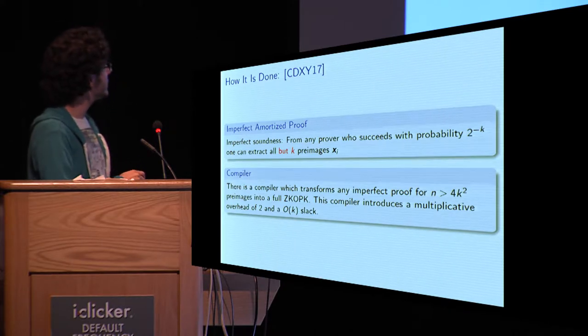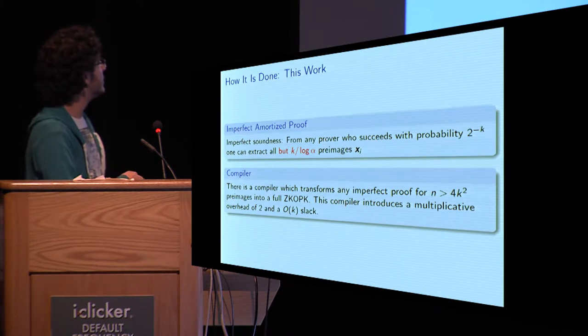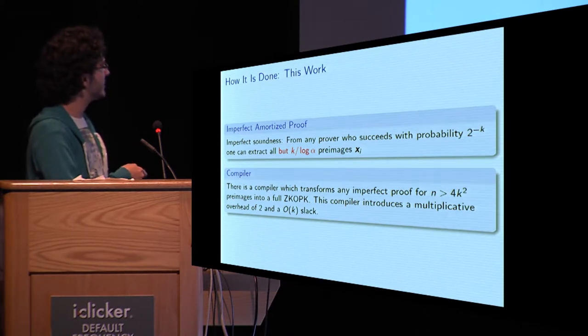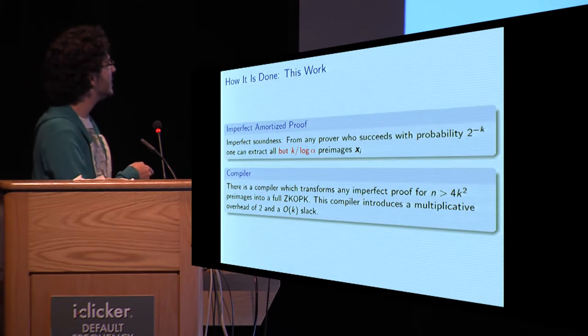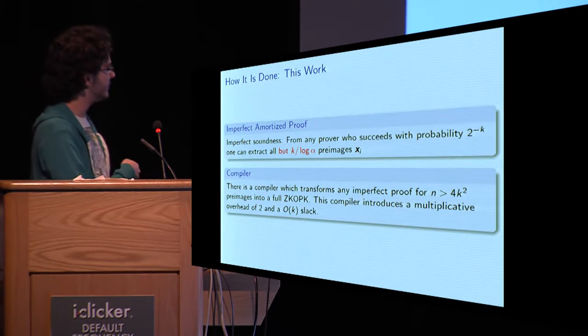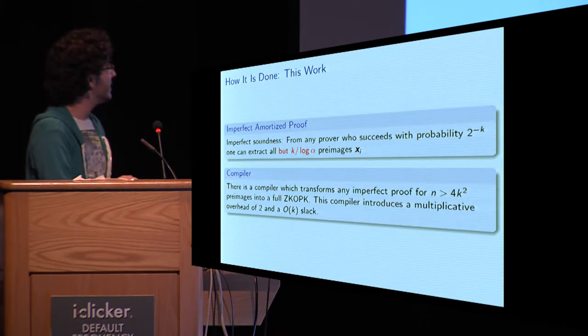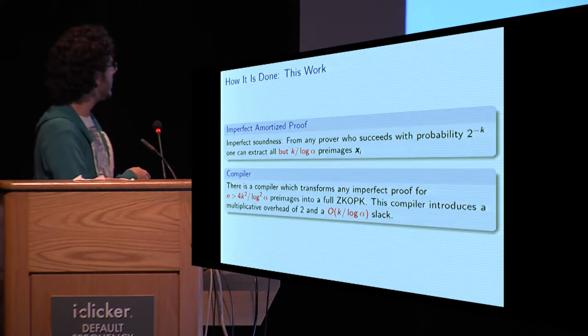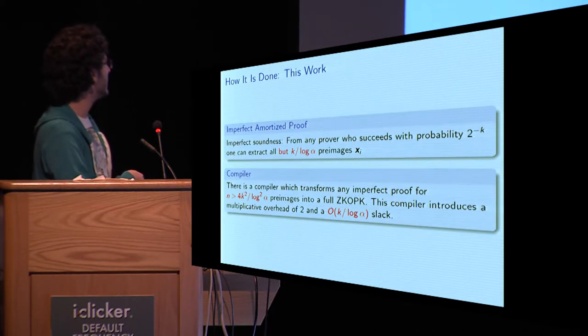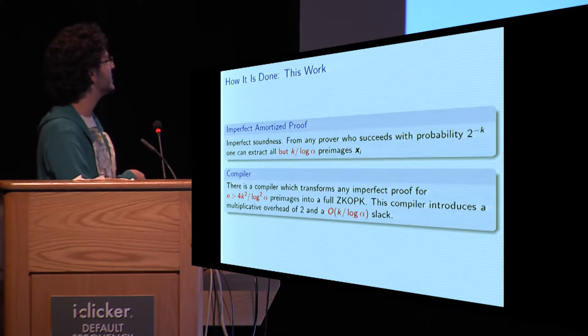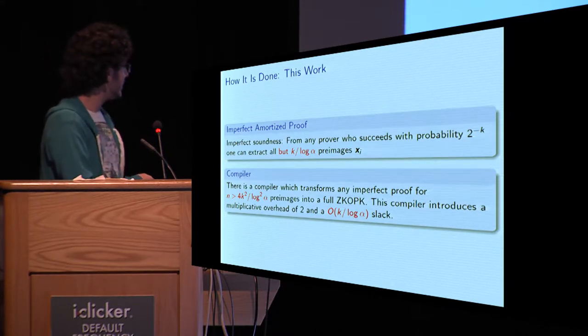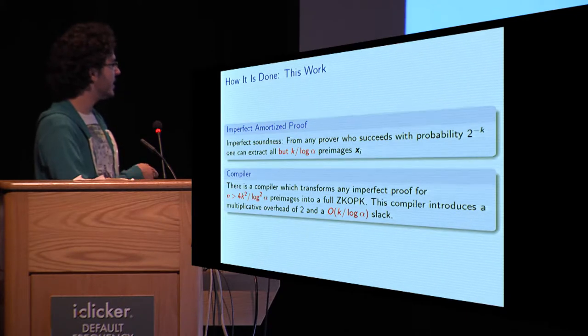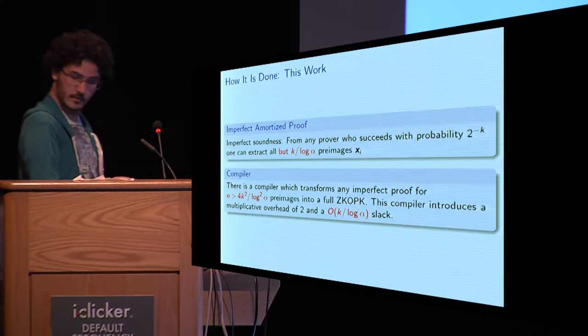We will not touch the compiler in this paper. We will focus on the amortized proof. We will work to reduce this number of things we can extract to K divided by log alpha for some parameter alpha. And naturally, just doing this means that when using the compiler, we will divide this K by log alpha again, and only need N greater than 4K squared divided by log square alpha. And same thing for the slack. We will divide the slack by log alpha.